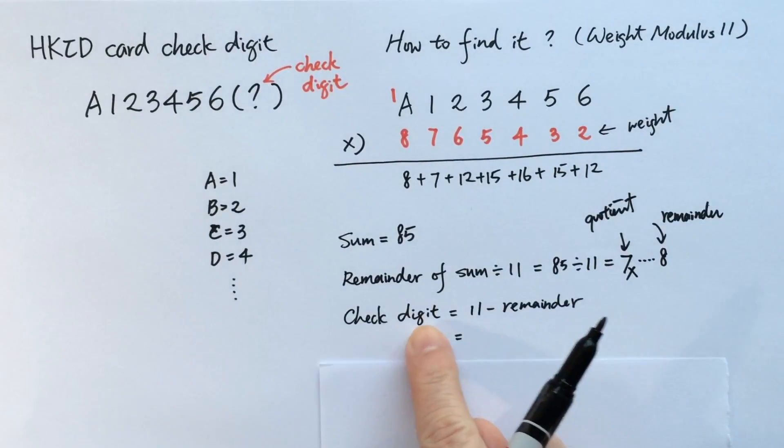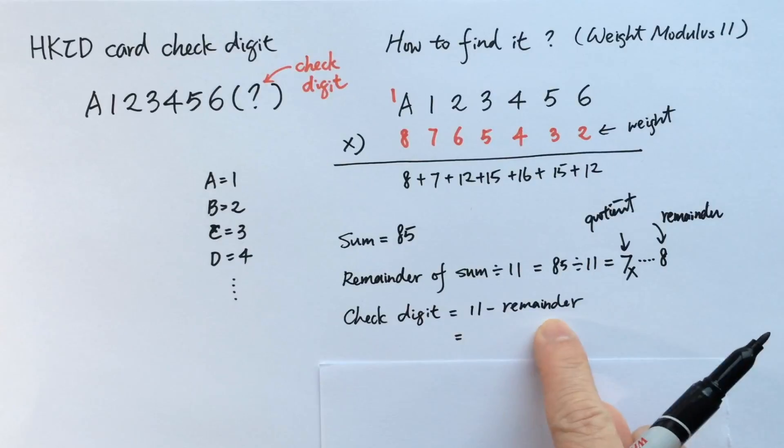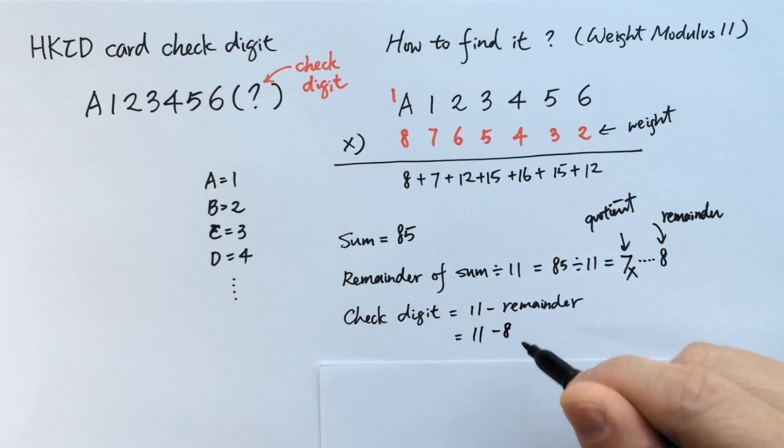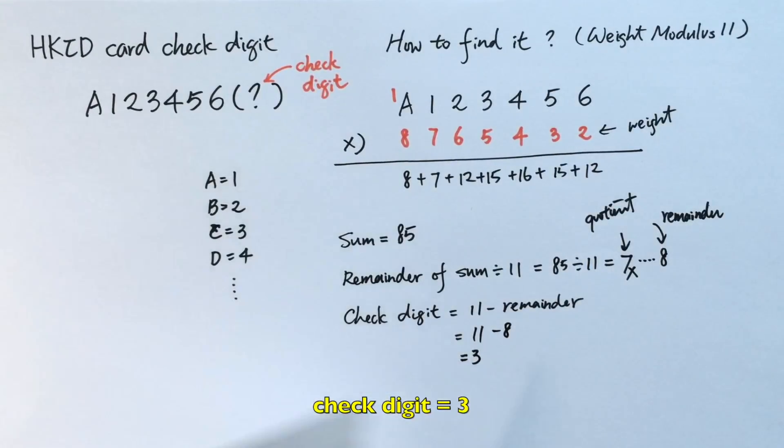And finally, the check digit will be 11 minus the remainder. Because we have the weight modulus 11, so we base everything on 11, and therefore this becomes 3.